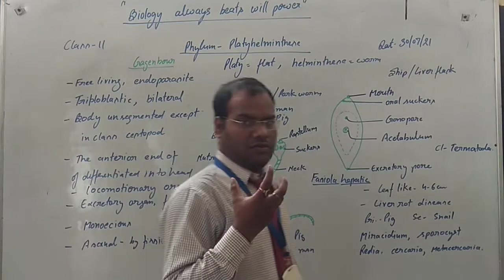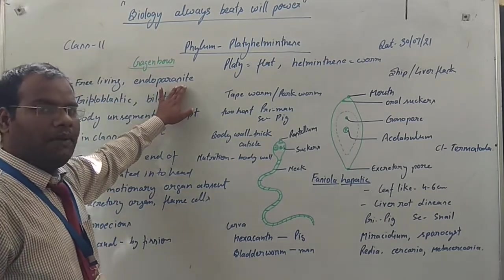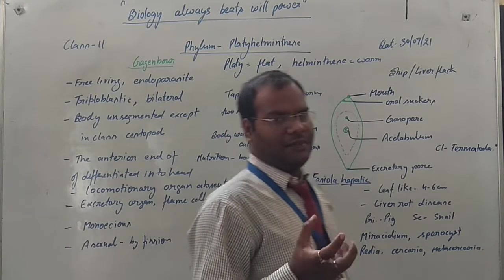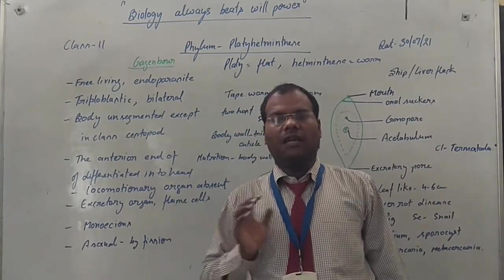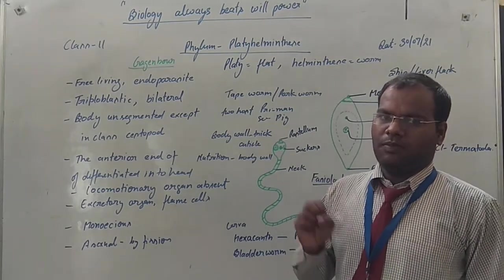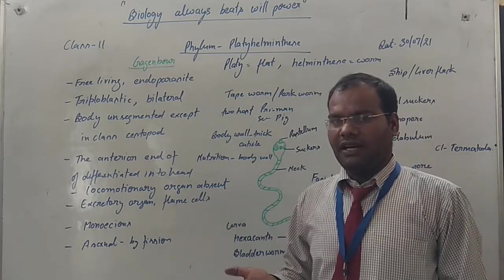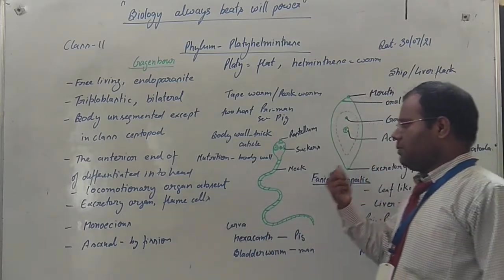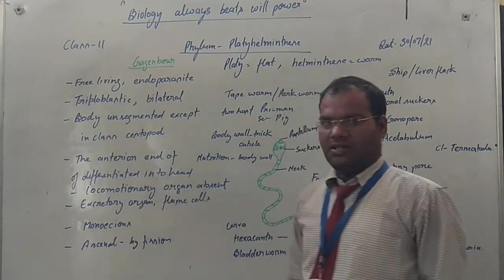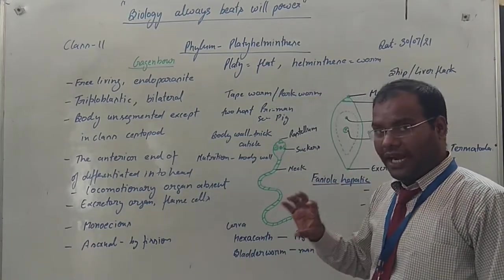Now we discuss some common features of Platyhelminthes. These are free-living organisms or endoparasites — organisms present inside the body. These are triploblastic. Most organisms have organ level of organization. But few species of Platyhelminthes have tissue level of organization. Tissue level of organization is observed in planaria; organ level of organization is observed in Fasciola hepatica and Taenia solium. From this phylum, head formation starts.